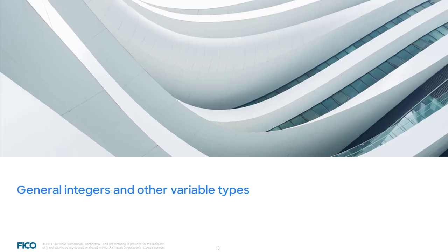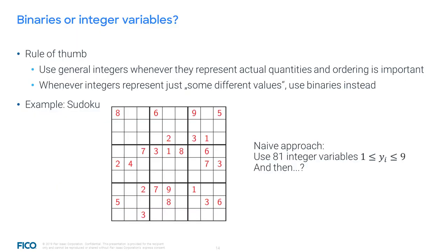Let's talk about different variable types. Almost all MIP models in practice have at least some binary variables. In particular, in combinatorial problems, a lot of them are purely binary. A question that comes up again and again is when variables should be binary and when general integer. Integer variables should only be used to model actual quantities when the order of them is relevant. To simply represent some different values, it's almost always better to use binaries instead of integers.